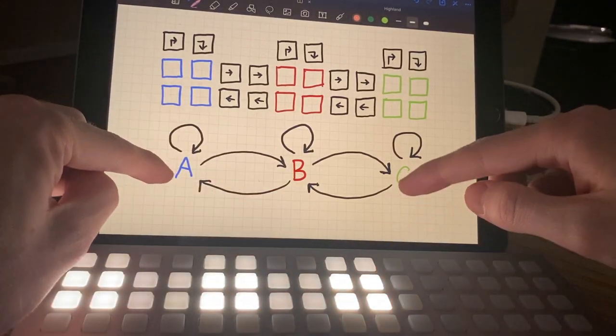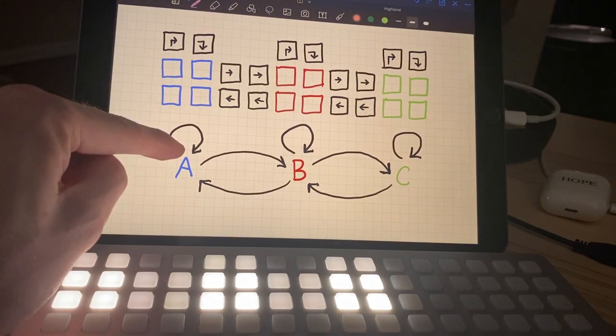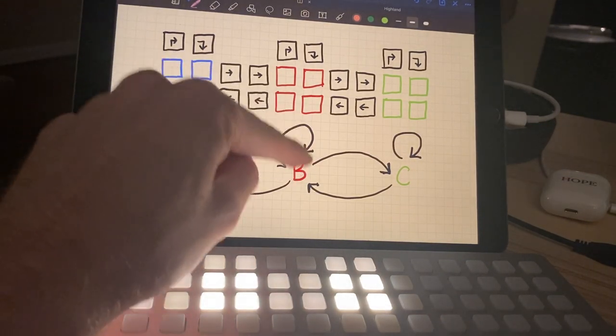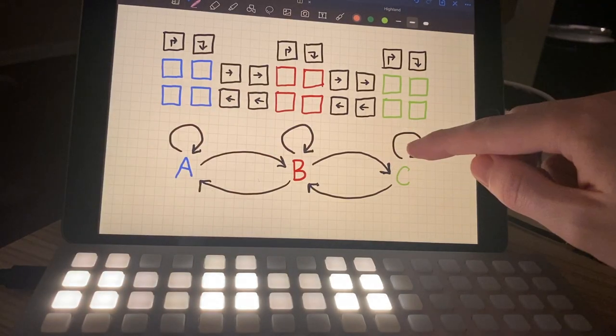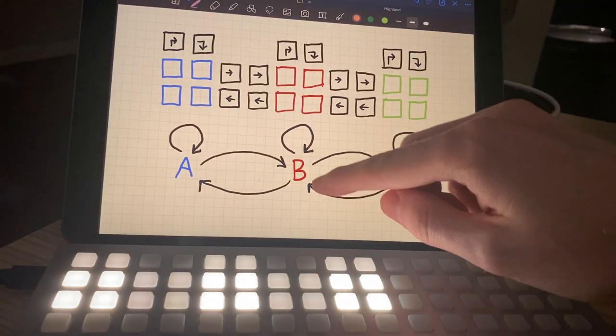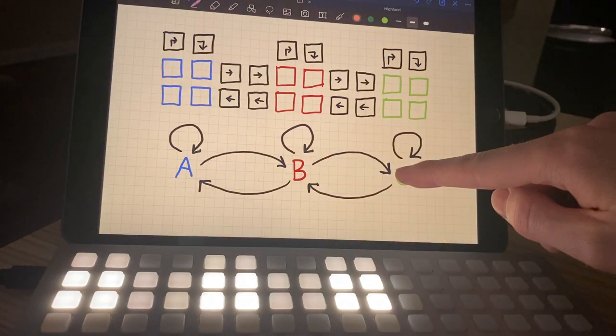Pathways are illustrated here, so A can go from A back to itself, B can go from B back to itself, C can go from C back to itself, C can go to B, B can go to A, A can go to B, B can go to C.